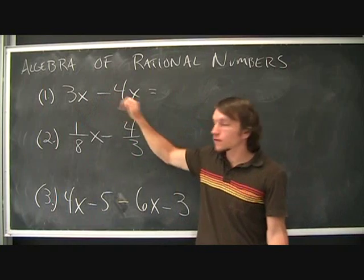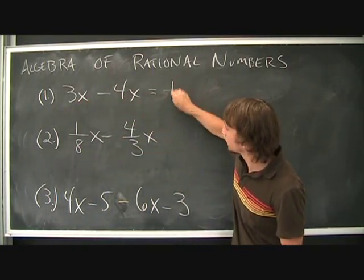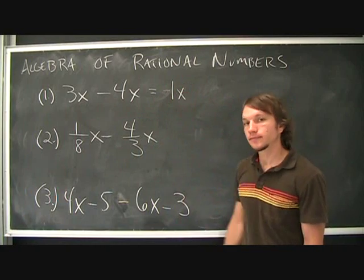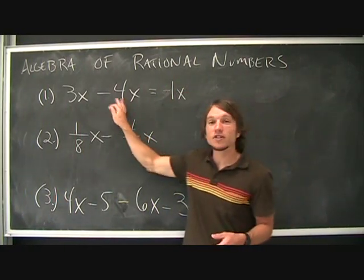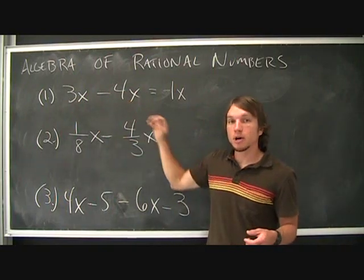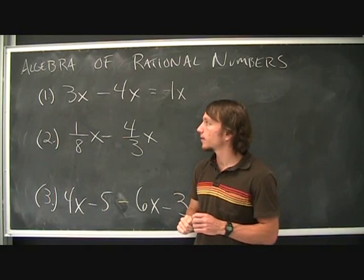So 3x minus 4x is simply, I go 3 minus 4 which is negative 1. So if I can do operations on integers and fractions, I can do operations on these algebraic expressions, that is with addition and subtraction. We'll talk about division and multiplication a little bit later.